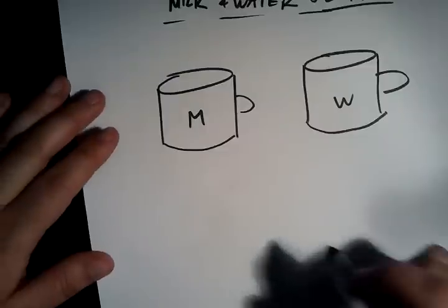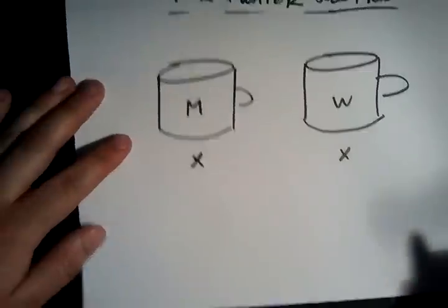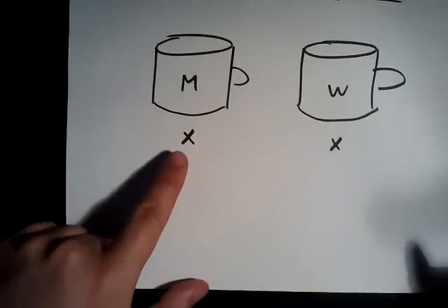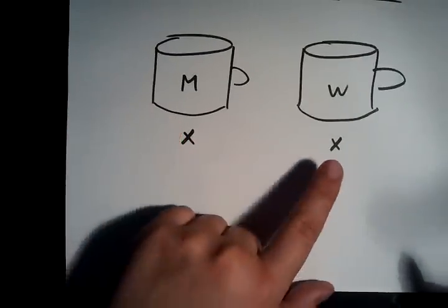So we're going to say the volumes of each of these in the beginning are going to be x. So this one has x, let's say, liters of milk, and this one has x liters of water.